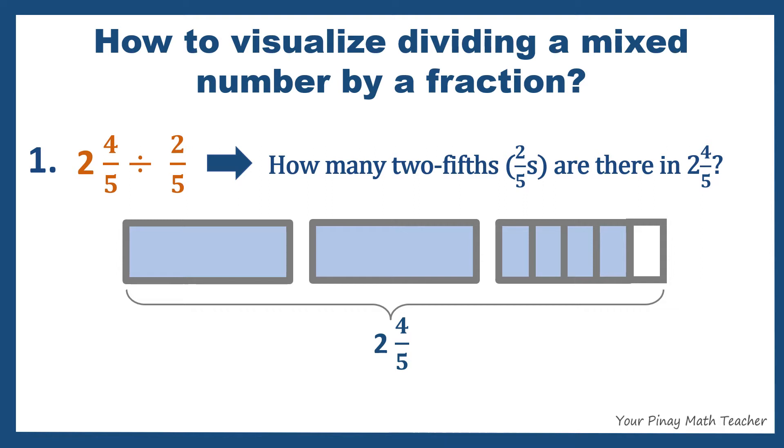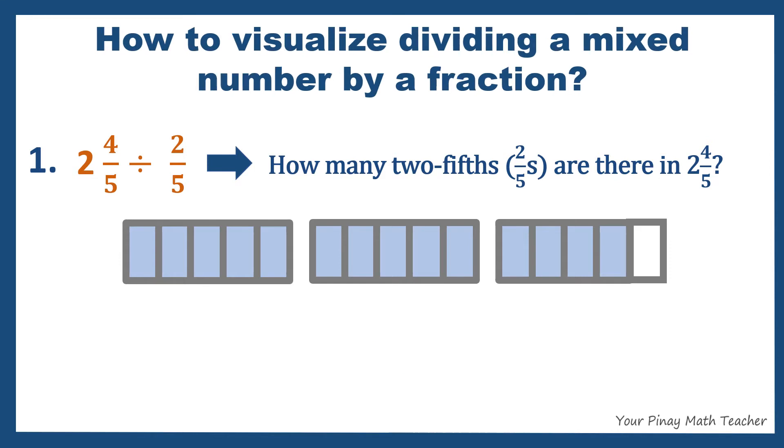the last hole is divided into 5 equal parts. Let us also divide the first 2 holes into 5 equal parts. Each equal part is equivalent to 1 fifth. Therefore, 2 fifths consist of 2 equal parts. So how many 2 fifths are there in 2 and 4 fifths? Let's count.